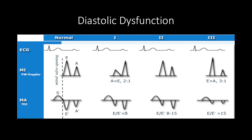The most severe form, Grade III or restrictive filling, is when the left atrial pressure is so high that blood rushes into the left ventricle when the mitral valve opens. Therefore, the E wave is typically 2.5 to 3 times the A wave, and sometimes the A wave isn't even seen. However, the E' or actual motion of the myocardium on TDI is abnormally low.